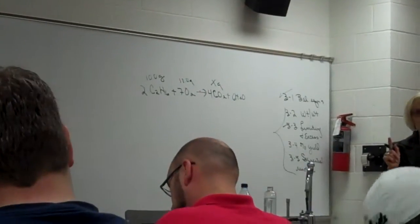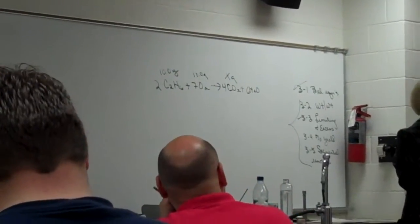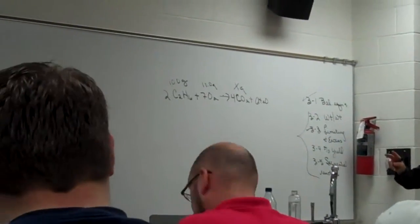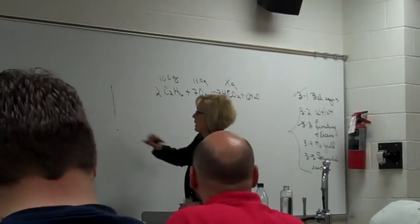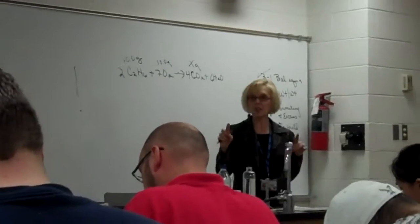Now, how do we know what we're up against? How do we know what kind of problem we're up against? Two reactants are told. Therefore, you're on full alert because it's going to be limiting in excess.